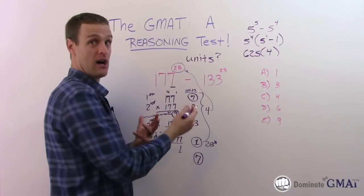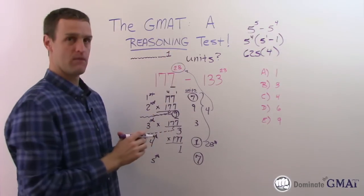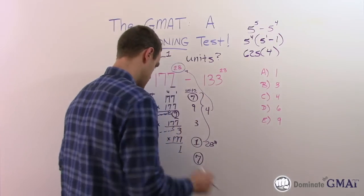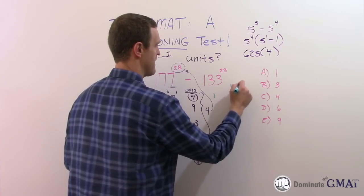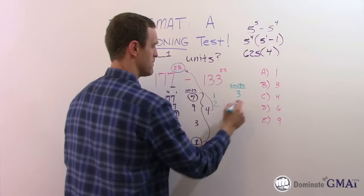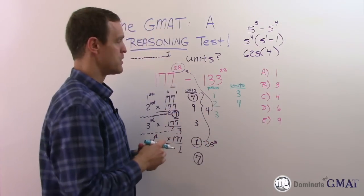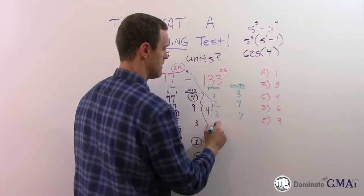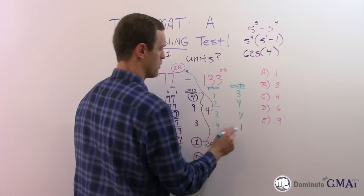Now we have to do it again for 133 to the 23rd power. Let's do the same thing. The first power, the unit's digit is 3. The second power, 3 times 3 is 9. The third power, 9 times 3 is 27, so the unit's digit is 7. The fourth power, 7 times 3 is 21, unit's digit is 1. The fifth power, 1 times 3 is 3. It's going to repeat again, also every four. Just coincidence.